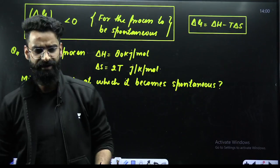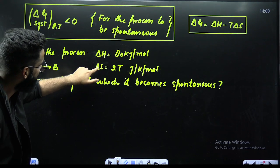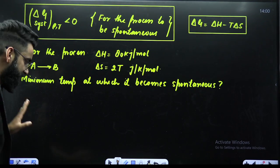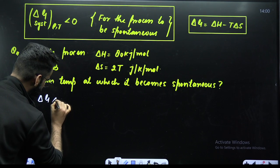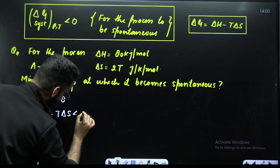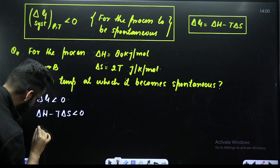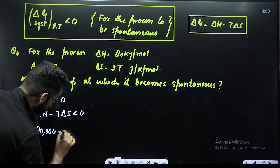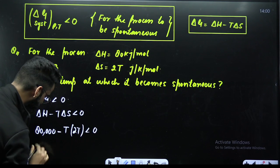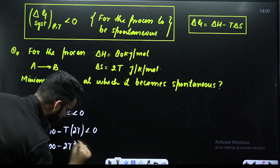For example, you are given the process A → B, where ΔH = 80 kJ (i.e., 80,000 J) and ΔS = 2T. For the process to be spontaneous, ΔG = ΔH − TΔS must be less than zero. So: 80,000 − T × 2T < 0, which gives 80,000 − 2T² < 0.